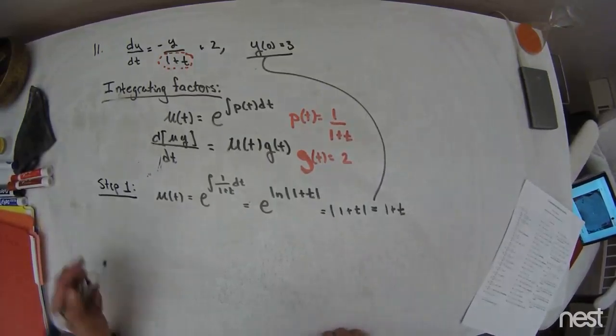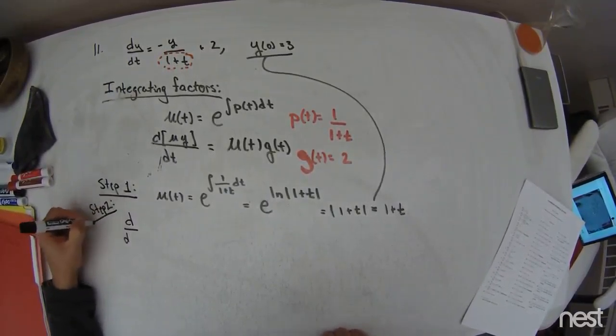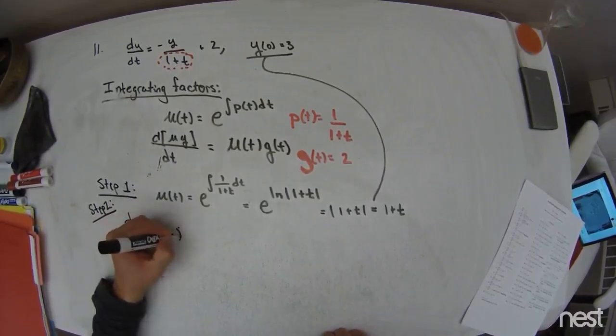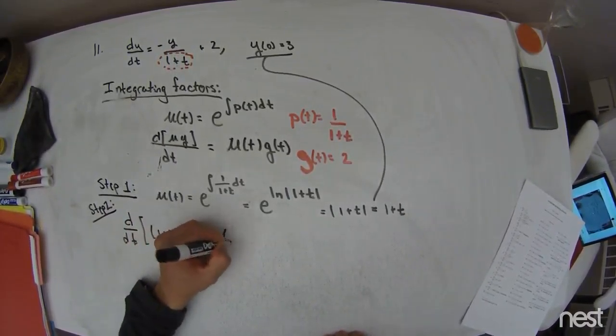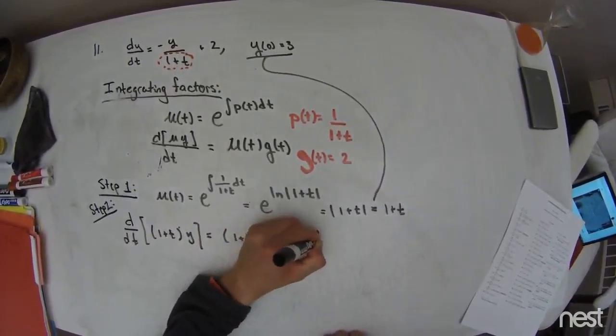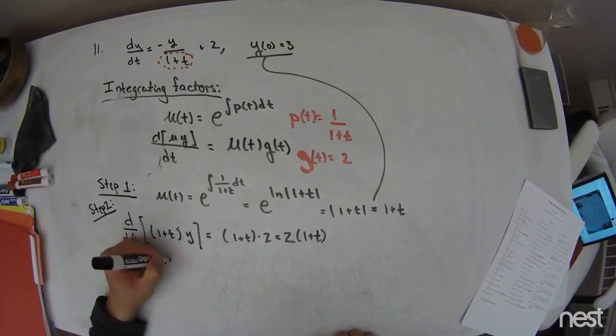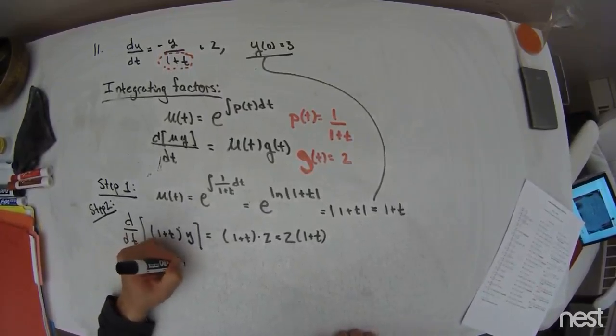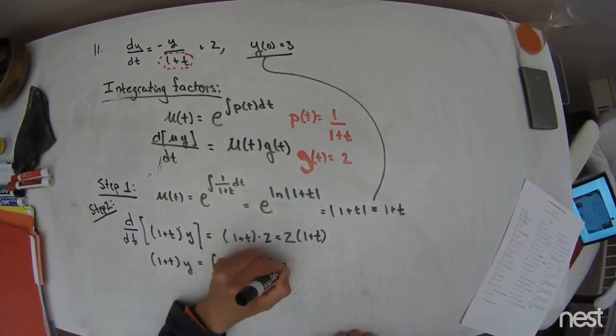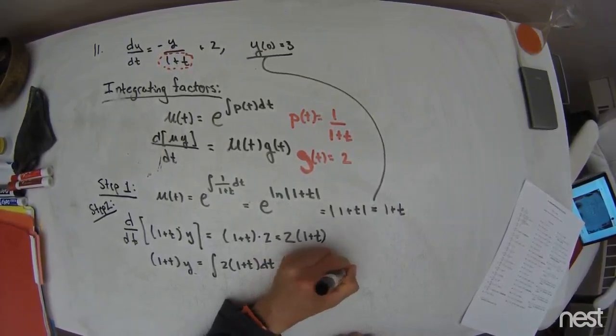So the next thing is, this is step 2, and I'm going to take the derivative with respect to time of 1 plus t times y. And that's going to be equal to 1 plus t times g of t, which is 2. So this is 2 times 1 plus t. If that's the case, I anti-differentiate both sides with respect to time, and I get 1 plus t times y is equal to the integral of 2 times 1 plus t dt, which is going to be equal to 2 times t plus t squared over 2 plus c.